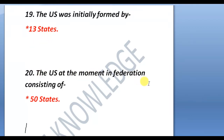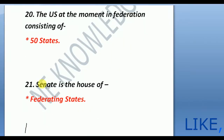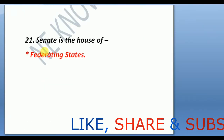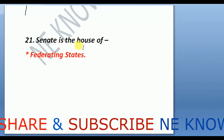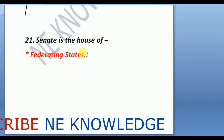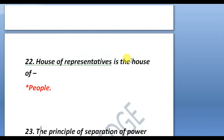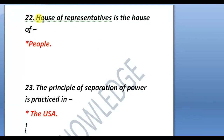The USA was initially formed by 13 states and at the moment is a federation consisting of 50 states. India is called a Union of States, but the USA is called a federation of states and it comprises 50 states. The Senate is the house of federating states, and the House of Representatives is the house of the people.